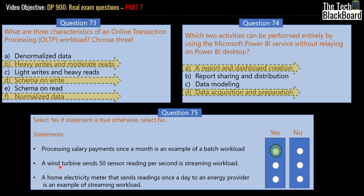The second statement says a wind turbine sends 50 sensor readings per second — is this an example of a streaming workload? Since we are receiving such a huge load of data per second, you have to process the data as and when it is coming to you. Thus, it is an example of a streaming workload, so this statement is also true.